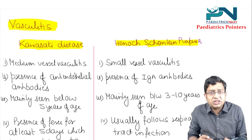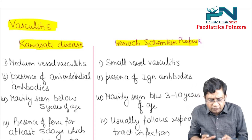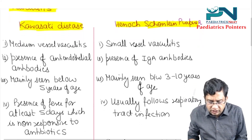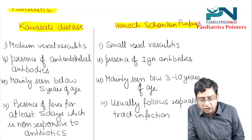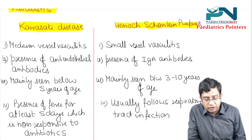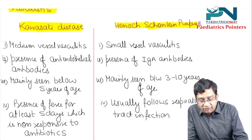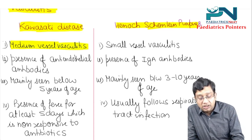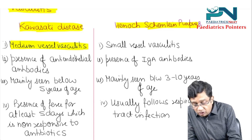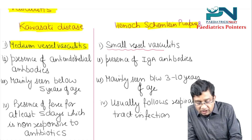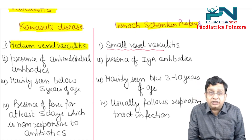I've formulated their points in a differentiation form so that it is easy to remember. Kawasaki disease is a medium vessel vasculitis, but Henoch-Schönlein Purpura is a small vessel vasculitis.